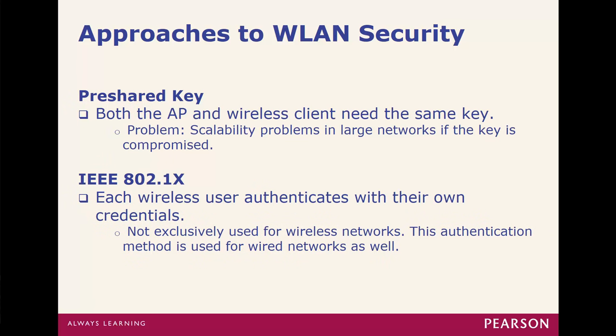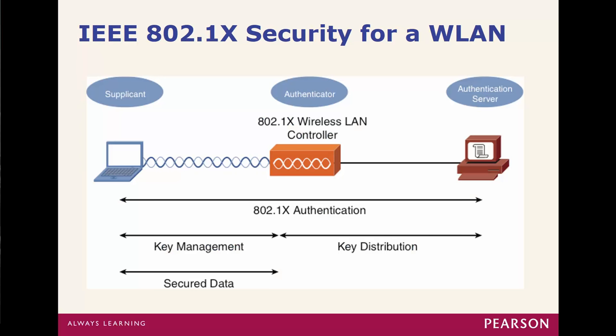Other approaches include using a pre-shared key, or IEEE 802.1X — authentication using someone's own credentials, very similar to port authentication. Normally you set up a RADIUS server or some type of authentication server to verify that end users have appropriate access to the wireless resource. You connect to a wireless controller, send the key, and the authentication server verifies your identity and distributes a key. Once confirmed, data is secured and you can use the access point to send network requests. Essentially RADIUS authenticates and then authorizes you based on the credentials provided.